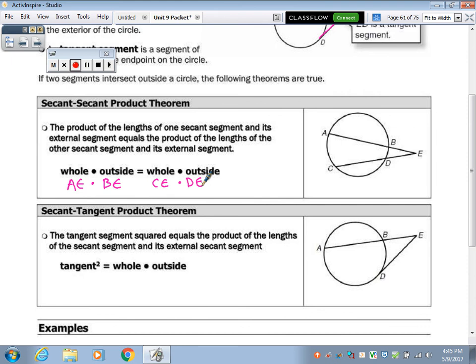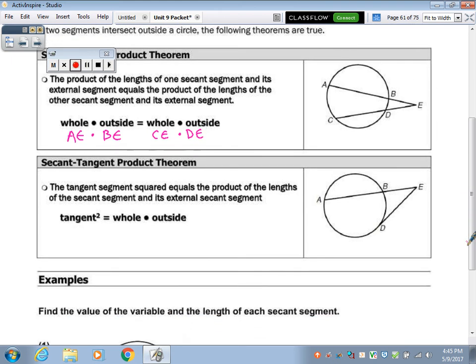Alright, now what if it's a tangent line? Look at the second picture. Well, for the secant, you've got the whole, which is AE, and the outside, which is BE. But for the tangent, the whole thing is DE, but the outside part is also DE. So it's still whole times outside, but it's the same thing twice. So you can write it as squared.